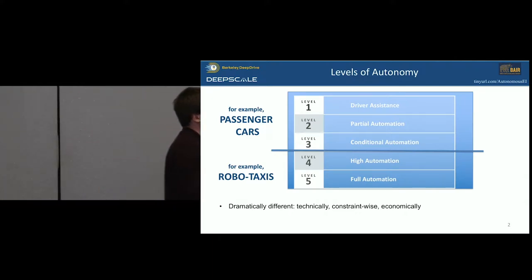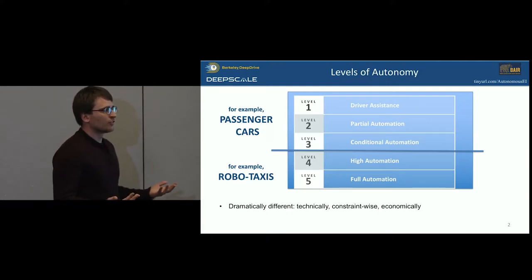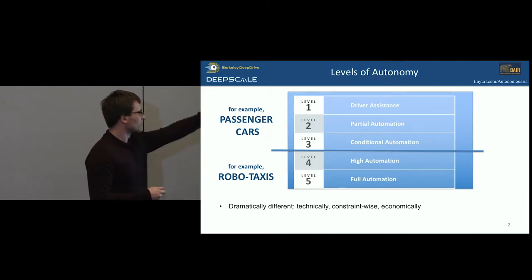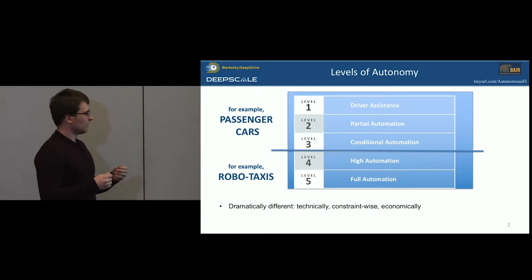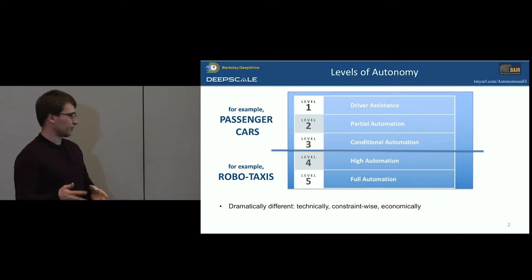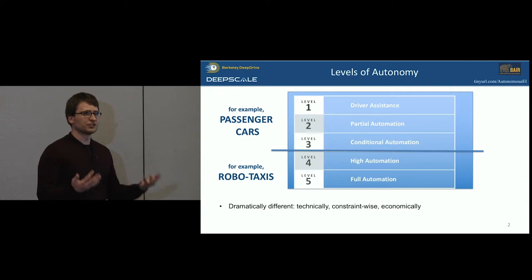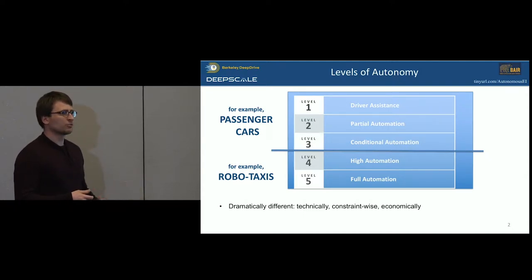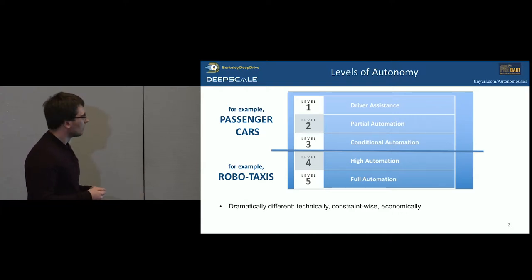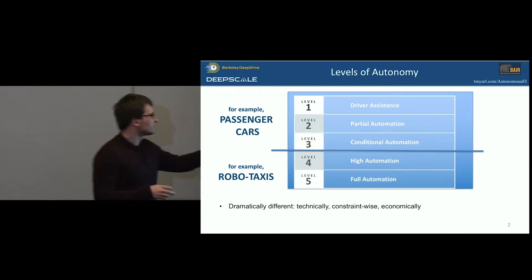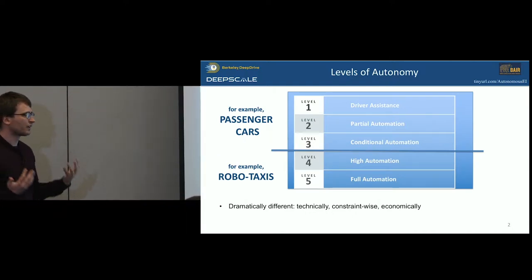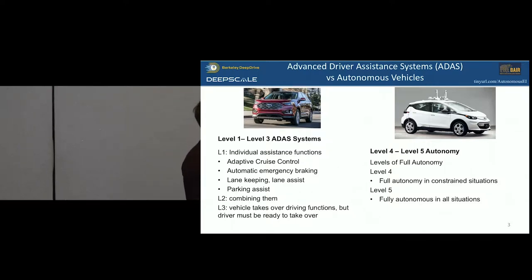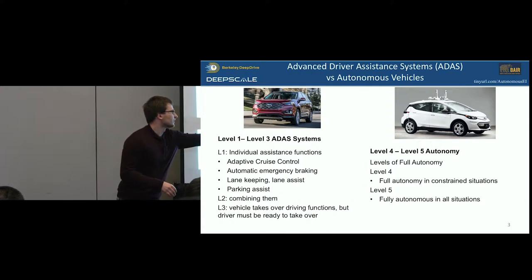First, levels of autonomy or levels of automation. The Society of Automotive Engineers — the SAE — has come up with a taxonomy of different levels, different degrees to which you can automate a vehicle. Levels one through three still require a steering wheel. Going from level one to three, you have more automation, but these are still typically passenger cars as a common implementation. Levels four and five: level four, the steering wheel is optional; level five, it probably doesn't even need to be there at all.